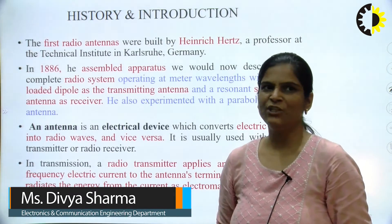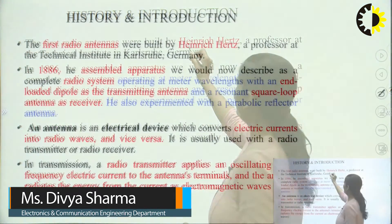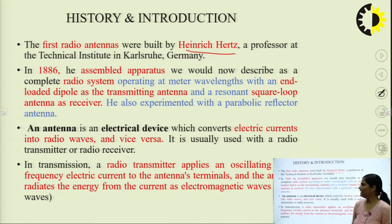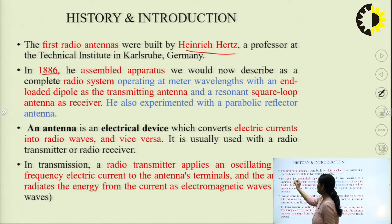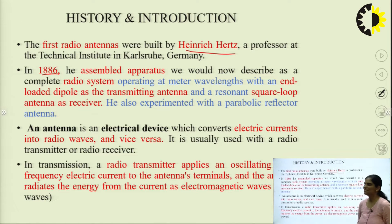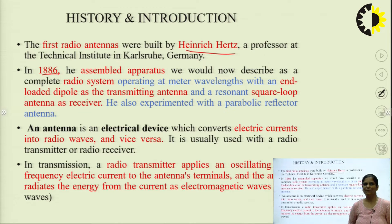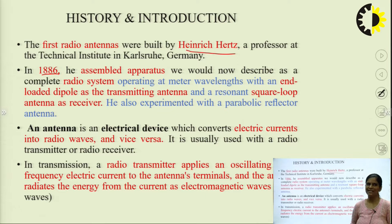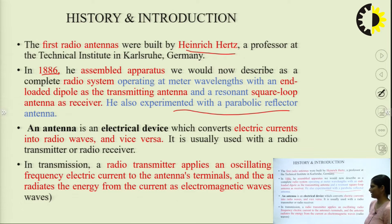The first radio antenna was built by Heinrich Hertz, a professor at the Technical Institute in Karls, Germany. In 1886, he assembled a radio system operating at meter wavelengths with an end-loaded dipole as a transmitting antenna and a resonant square loop antenna as a receiver, and he also experimented with a parabolic reflector.